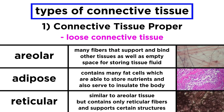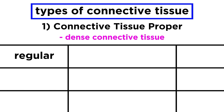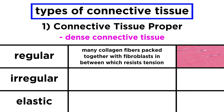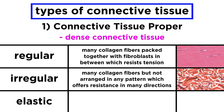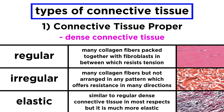Now looking at dense connective tissue, this can be regular, irregular, or elastic. The regular variety is basically a bunch of collagen fibers packed together with fibroblasts nestled in between, and this can resist a lot of tension, thus forming tendons and ligaments. The irregular type also has lots of collagen fibers, but they are not arranged in such an organized manner, offering resistance to tension in many directions. Lastly, elastic connective tissue is similar to the dense regular variety, but more elastic.